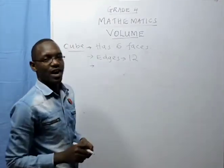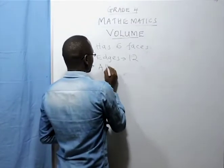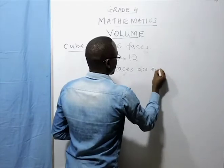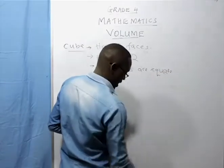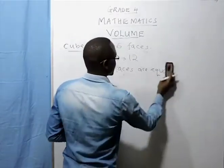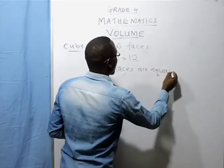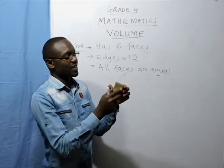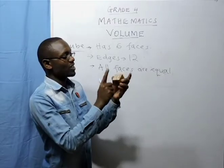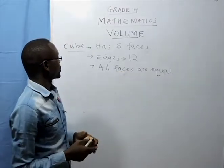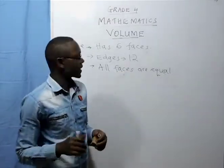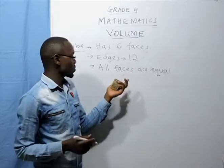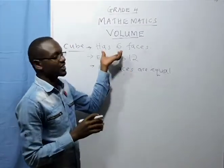Another property of a cube: it has all faces equal. All faces of a cube are equal. That means this face on this part is equal to this face, and it is also equal to this face, and equal to this face. All faces are equal. So it has twelve edges and six faces, which are all equal.